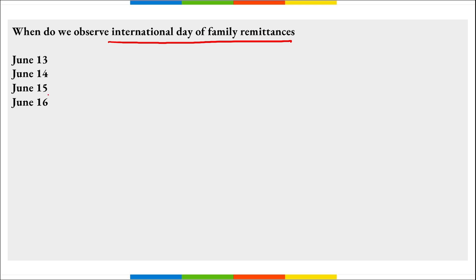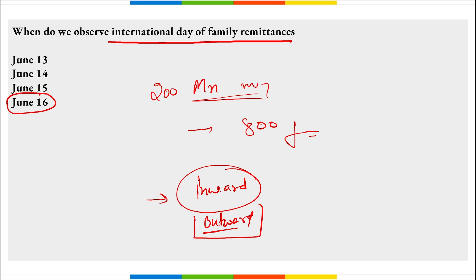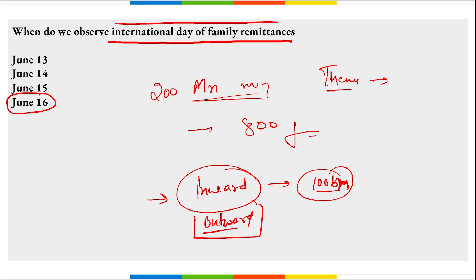International Day of Family Remittances is observed on 16th of June to recognize the crucial contribution of over 200 million migrant workers across the world who send money to over 800 million families in low and middle income countries. There are two types of remittances: inward remittance — when an Indian person working abroad sends money back to India — and outward remittance — when an Indian family sends money to their child studying or working outside. India received inward remittances of $100 billion last year. The theme is 'Digital Remittances: Towards Financial Inclusion and Cost Reduction.'